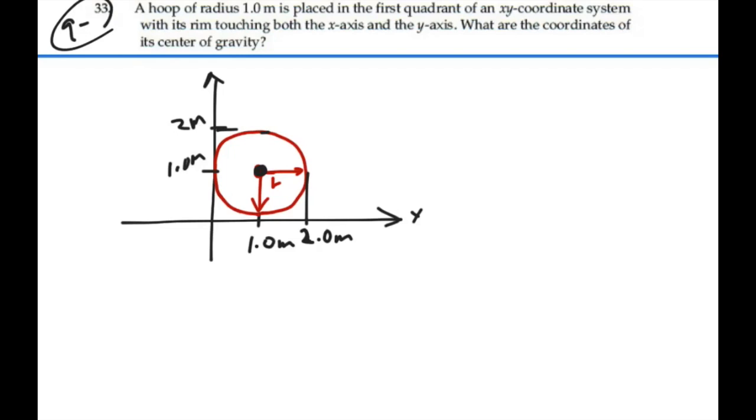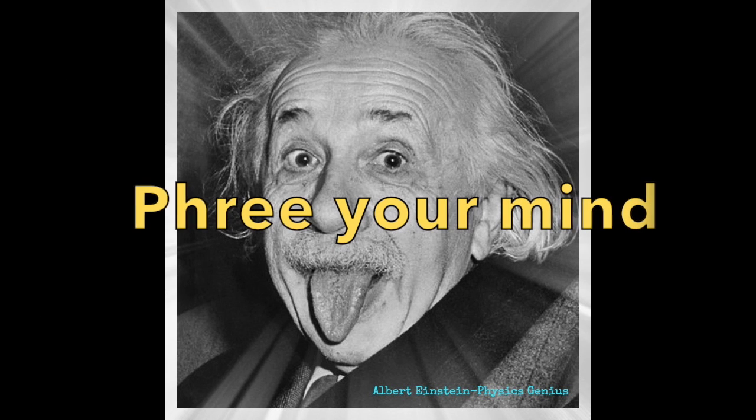So the center of mass of this hoop is going to be at x equal 1 meter and y equal 1 meter for a radius of 1 meter in this quadrant. So that's our answer: 1 meter, 1 meter.